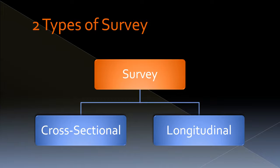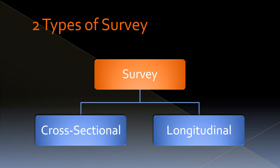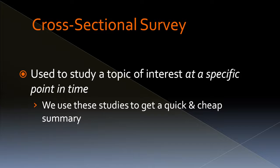There are only actually two different types of survey: a cross-sectional survey or a longitudinal survey. A cross-sectional survey is used to study a topic of interest at a specific point in time, and we use these studies to get a quick and cheap summary.